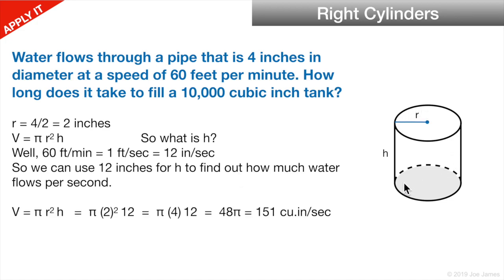The volume of the cylinder that's 12 inches long is π r² h, or π × 2² × 12 = π × 4 × 12, or 48π. I estimated π as 3.14 and rounded it off: 151 cubic inches per second. So that means there's this volume of liquid flowing. One foot per second is 151 cubic inches of water.